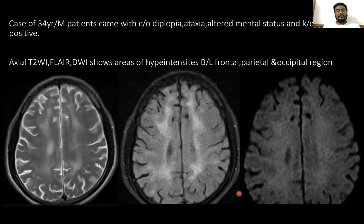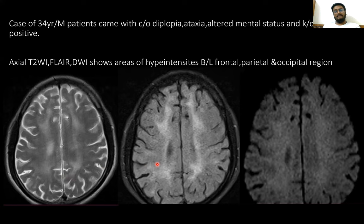Here is a case of a 34-year-old male presenting with diplopia, ataxia, altered mental status, and known HIV positive. On axial T2-weighted image, there is a hyper-intense lesion in the subcortical fibers crossing the splenium, showing the barbell sign. On FLAIR imaging, it shows hyper-intense lesion in the same areas. On DWI, there is somewhat diffuse restriction in the same areas, though not a complete diffusion restriction.